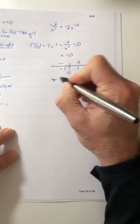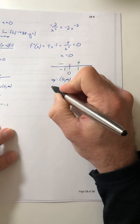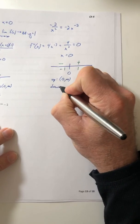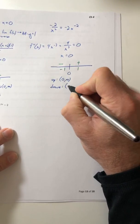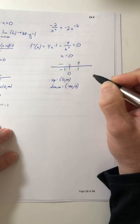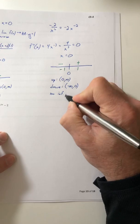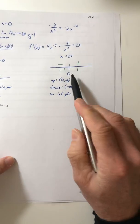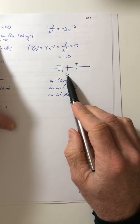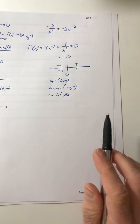So concave up, zero to infinity, concave down, negative infinity to zero and no inflection points. Because again, you can't plug zero in for x into the function that comes out as undefined.